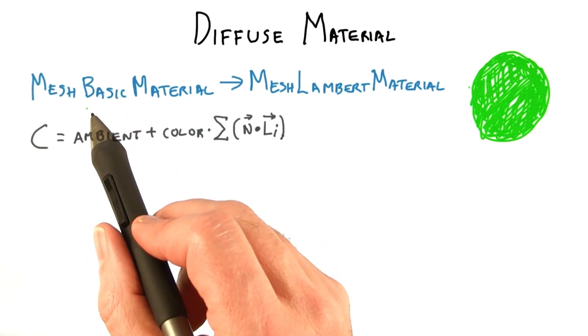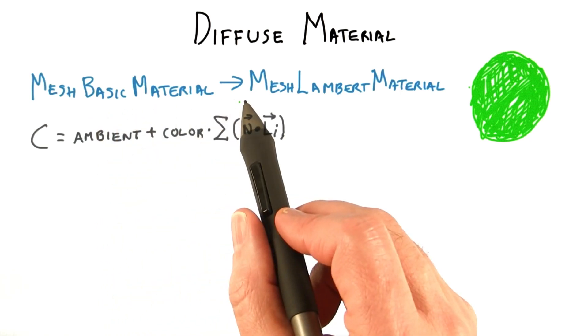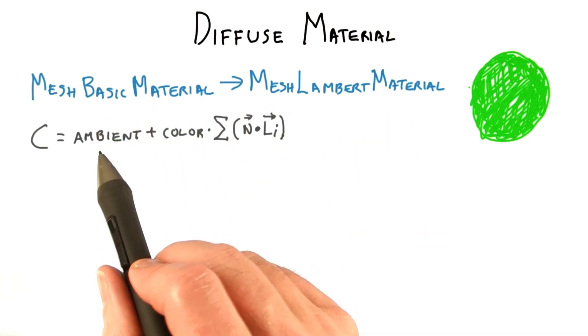To give this object a diffuse material, the first step is to change the material from 3JS's basic material to Lambert.